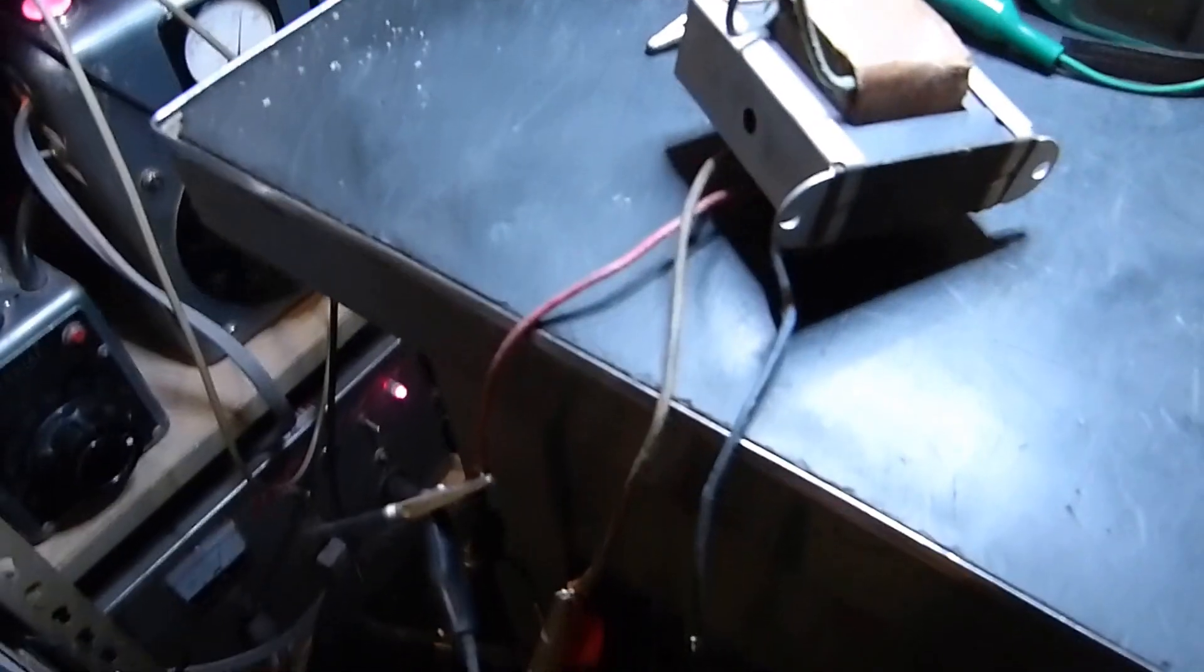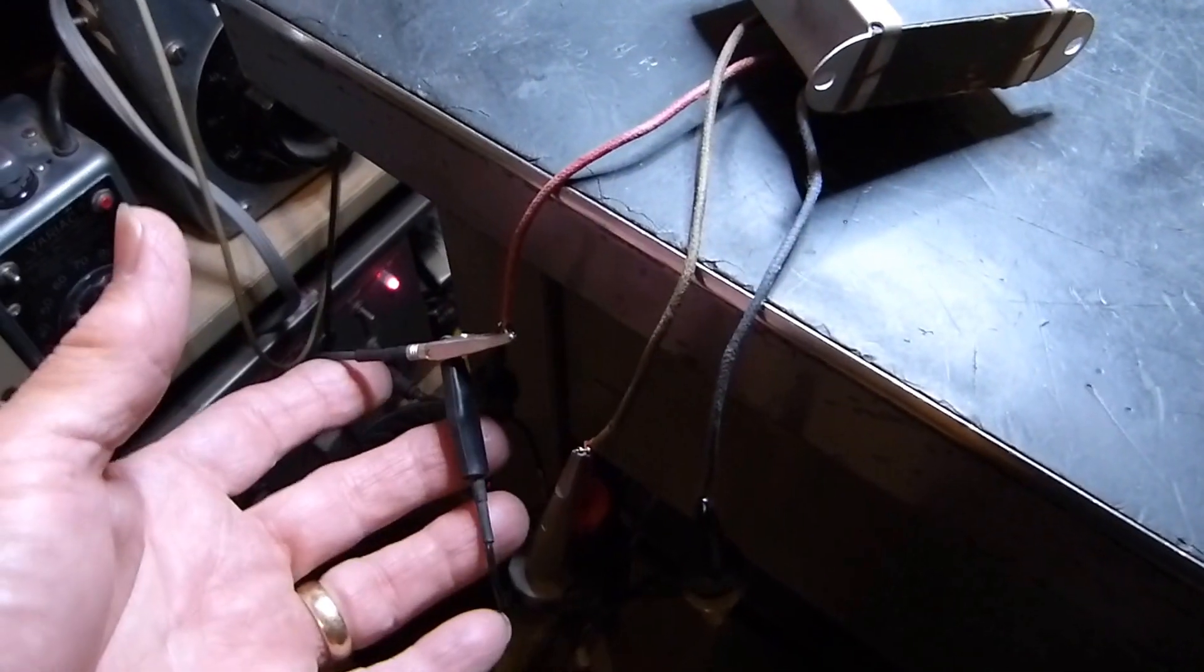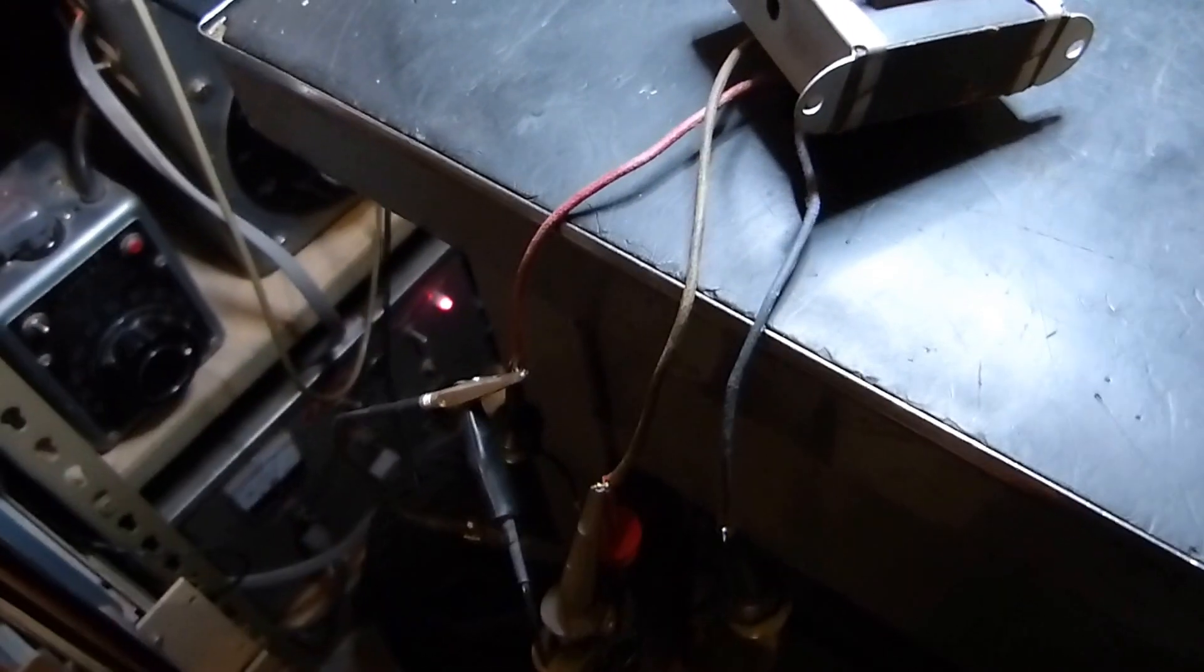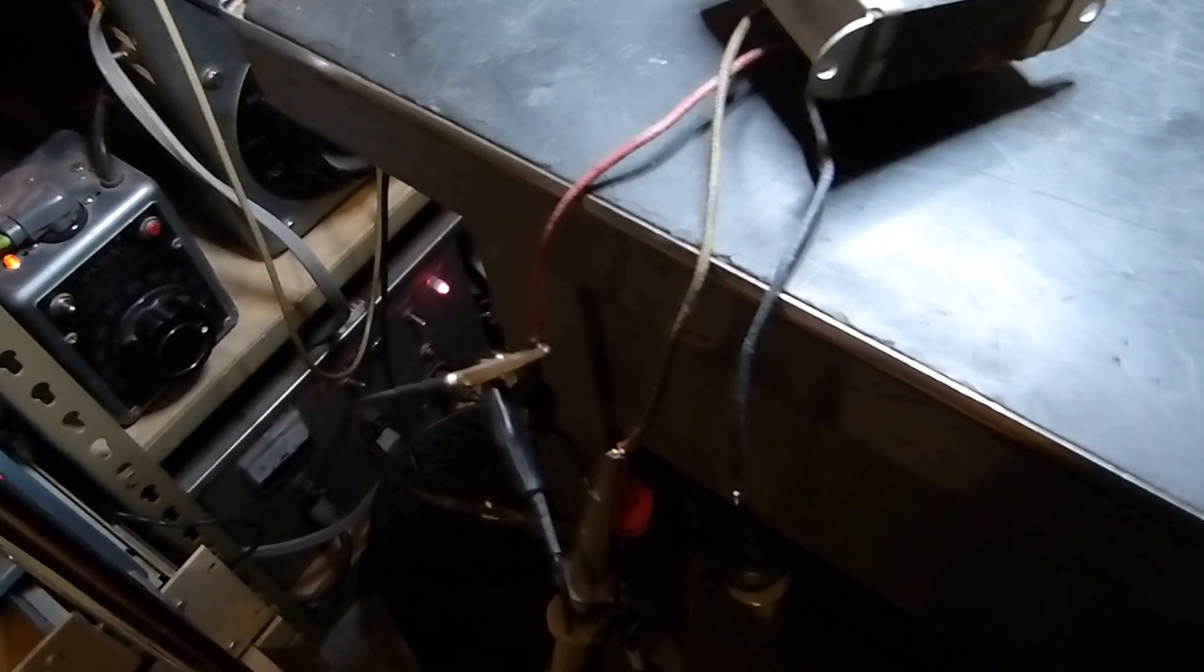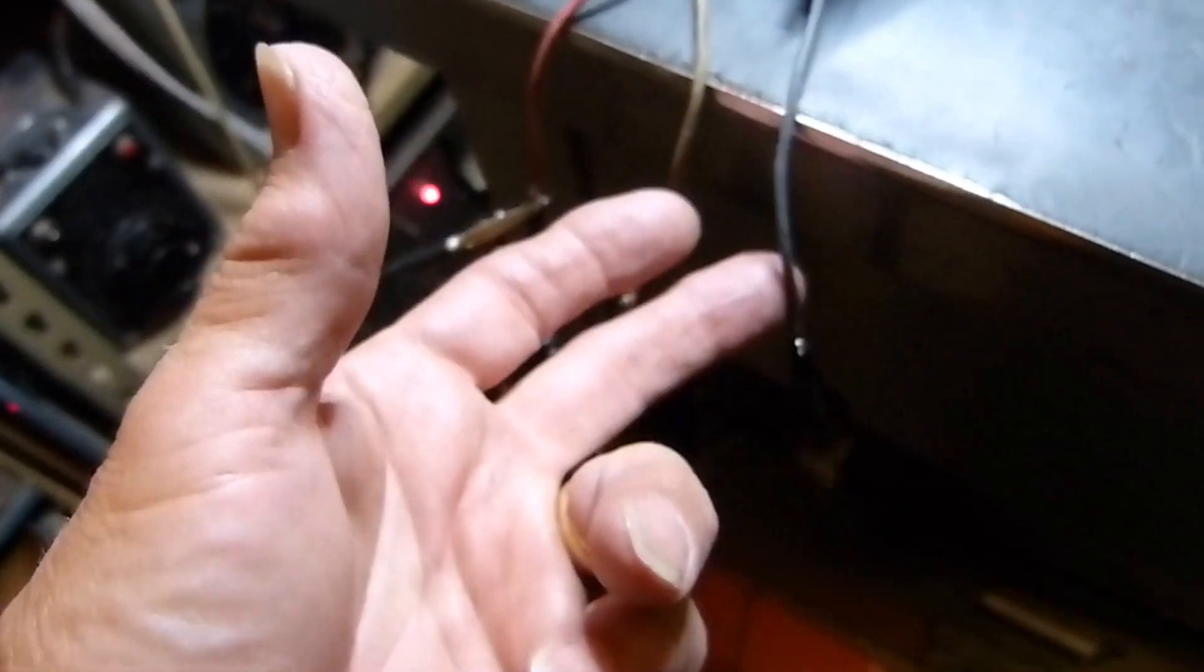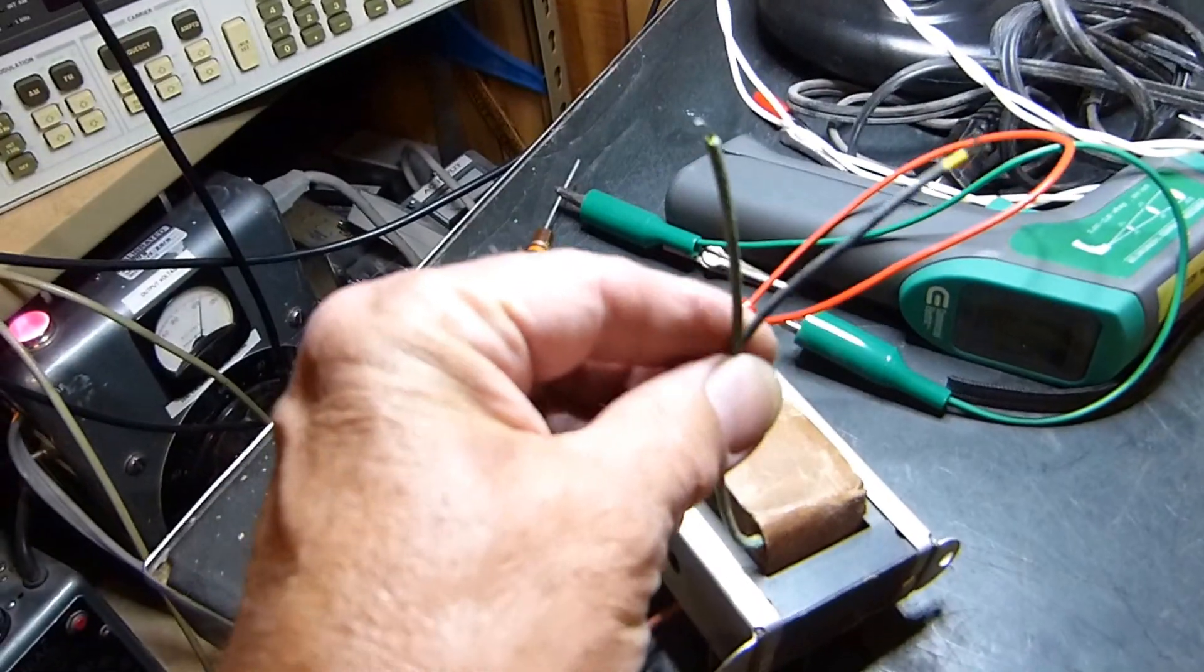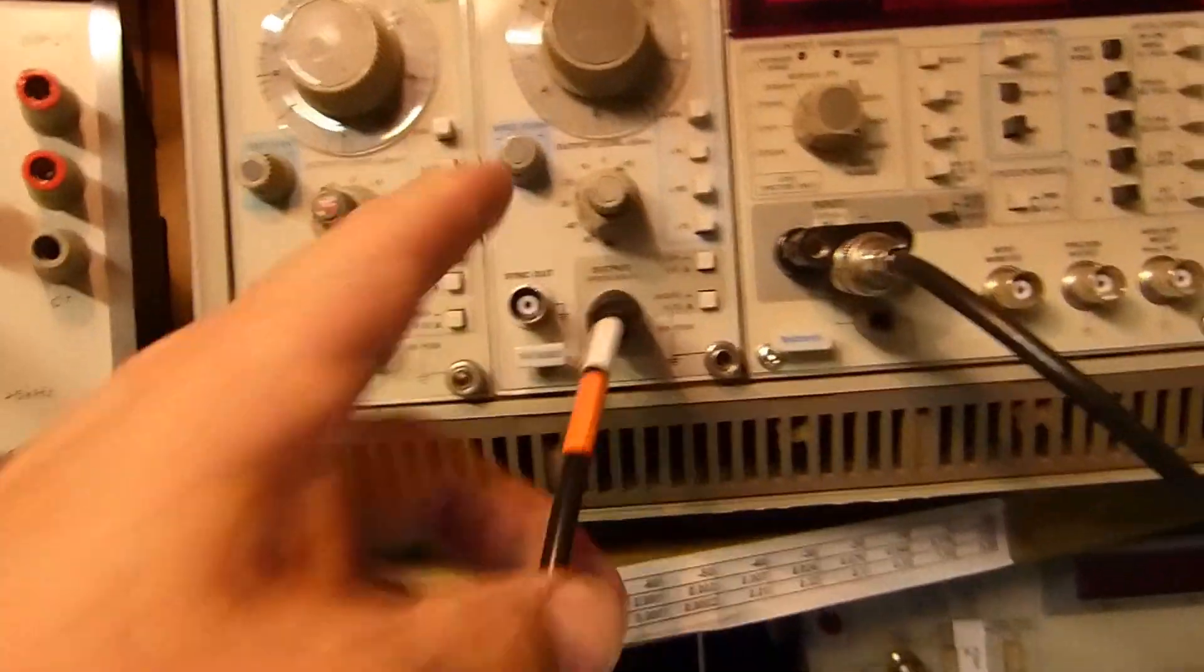What I'm using right here is a small push-pull output transformer with a center tap winding. This is the center tap, this goes to one plate lead, this goes to the other plate lead. The secondary leads out here - we're just not using them. From this oscillator at one kilohertz at plus 10 dB, a small voltage signal...